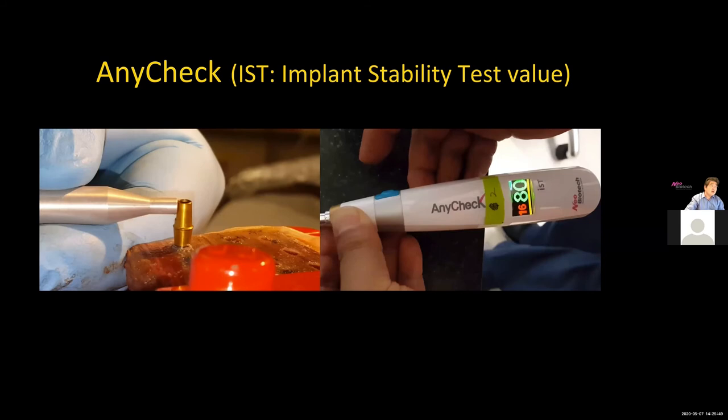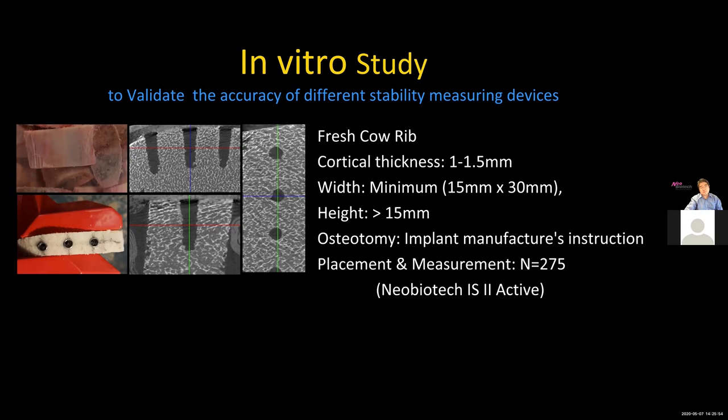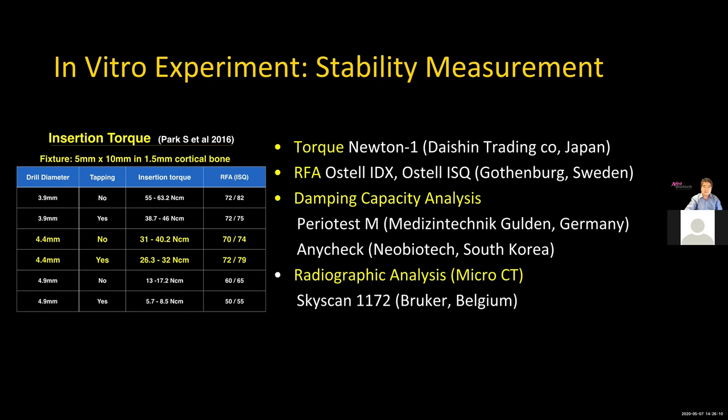Around 2015, I obtained all those machines and tried to validate stability values using four devices: torque, resonant frequency analysis (Osstell), damping capacity analysis (Perio Test), and Anycheck. I measured four times and also measured buccal-lingual distance with the RFA machine.